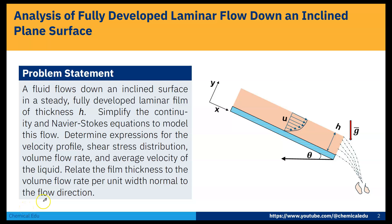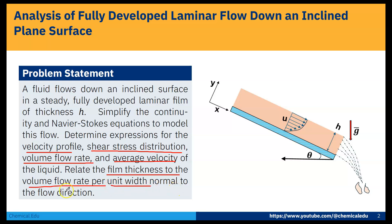Here is the problem statement: if fluid flows down an inclined surface in a steady, fully developed laminar film of thickness h, simplify the continuity and Navier-Stokes equations to model this flow. Determine expressions for the velocity profile, shear stress distribution, volume flow rate, average velocity of the liquid, and relate the film thickness to the volume flow rate per unit width normal to the flow direction.